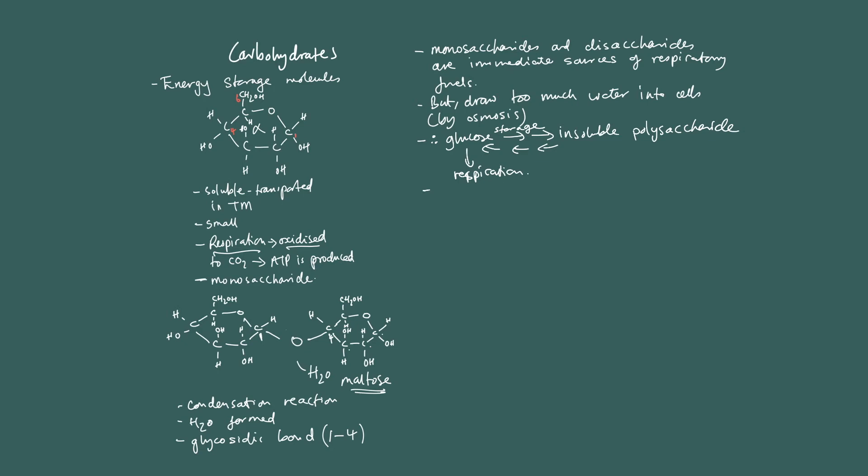Therefore, glucose is converted into insoluble polysaccharide. So it's like putting money in the bank. It's not as easy to get to, but at least you can put lots of it there. So glucose, insoluble polysaccharide, for storage. You convert it into the insoluble polysaccharide, and then you can, if you need to, you can break it down again back into glucose so that you can use it for respiration. You can't use the insoluble polysaccharide immediately for respiration. So this is the idea.